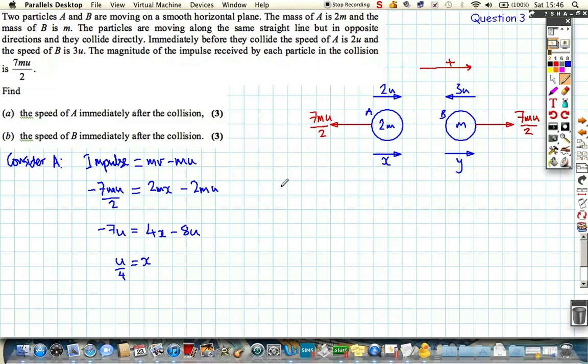If we consider particle B, we're going to do something very similar. The impulse equals the final momentum minus the initial momentum, which means 7mu over 2, and this time it's positive because it's acting to the right because B's direction has been reversed. This equals my and minus the initial momentum which is m times minus 3u. It's important we've got this minus 3u here because the velocity is negative, acting to the left.